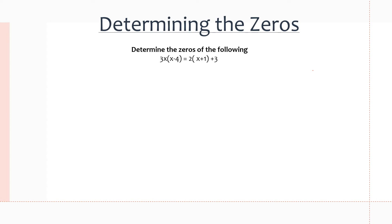Next we have finding the maximum or minimum values by determining the zeros of the function. The question says: determine the zeros of the following — 3x times (x minus 4) equals 2 times (x plus 1) plus 3. What we want to do is put it into standard form (ax squared), and then from there factor to find the zeros.